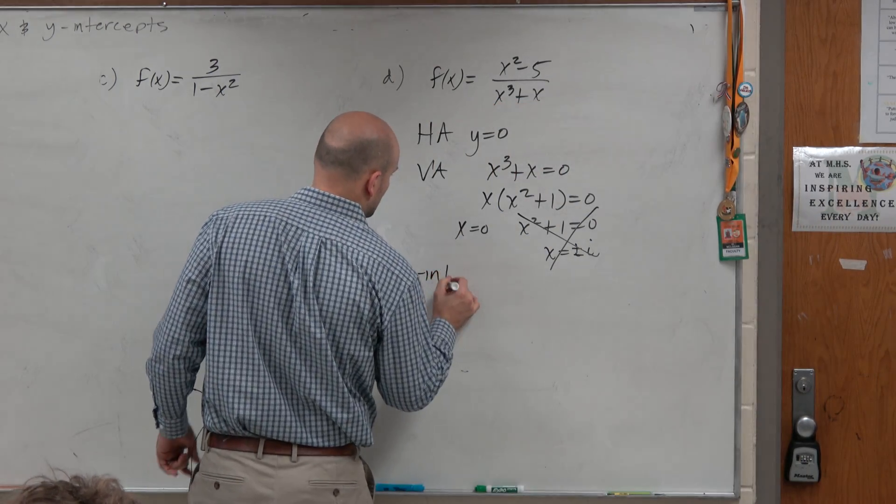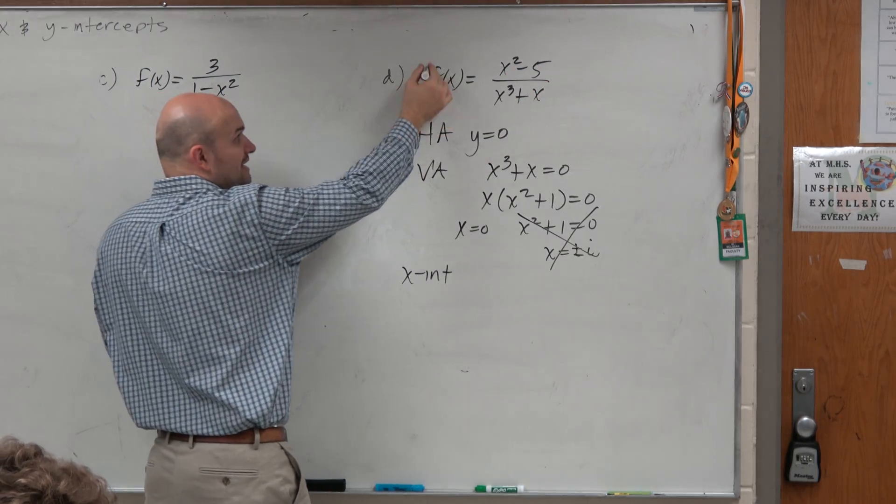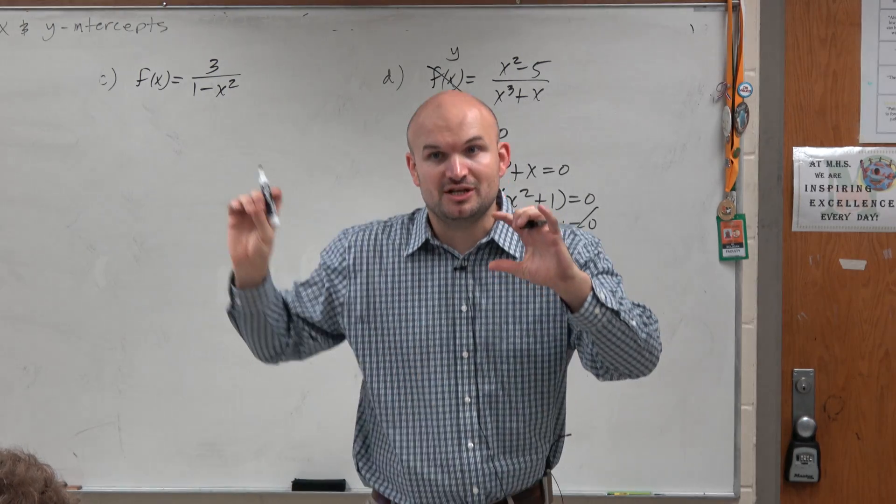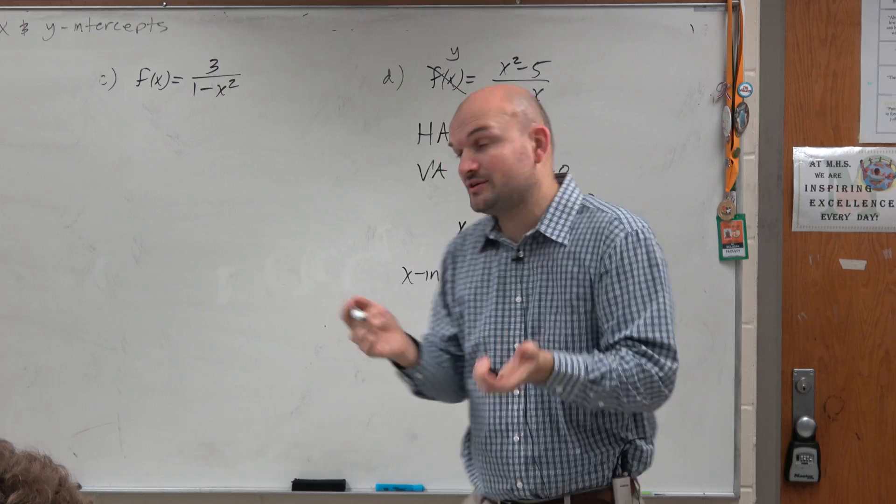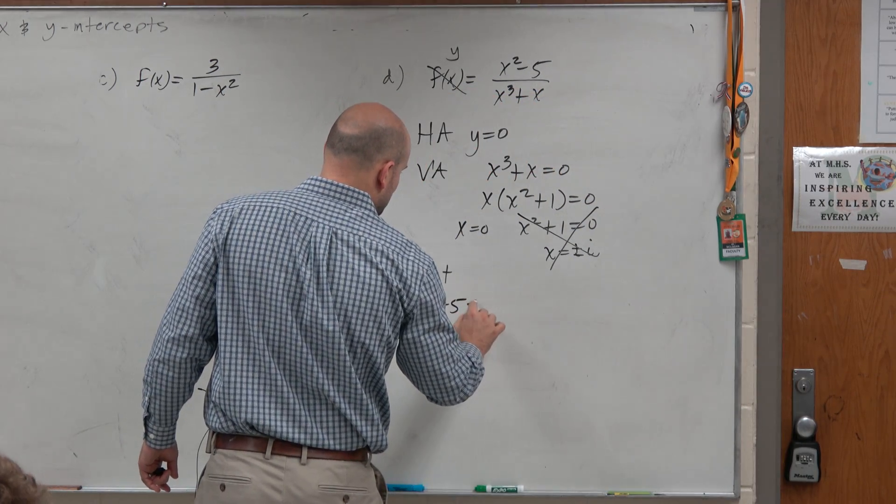x-intercept? Cool. I have a rational function. Replace y, in this case it's f of x, replace it with 0. And again, remember, what happens when you have a rational expression equal to 0? To find the x-intercepts, you can just set the numerator equal to 0, right? So I'm going to save some time. x squared minus 5 is equal to 0.